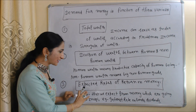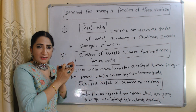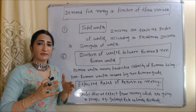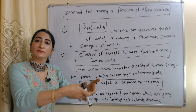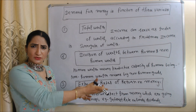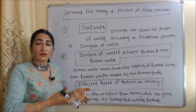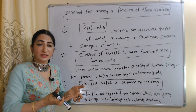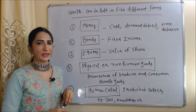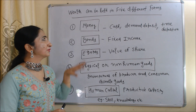The third factor that affects money demand is the expected rate of return on money — how much profit we expect from money that we invest. For example, interest rate on bonds, dividend on shares, or how much we think our property price will increase in future. Wealth is very important to determine money demand.